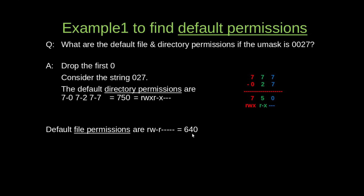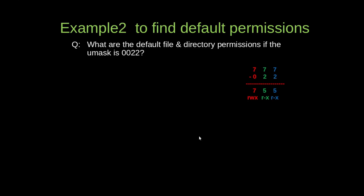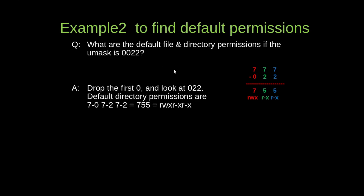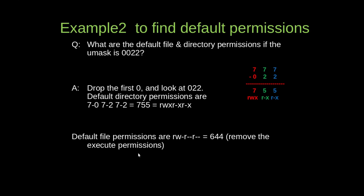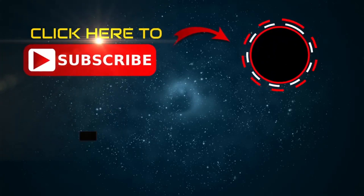For default file permissions, take the directory result and remove x from every position. So for umask 022: directory default is 755, and removing x gives file default as 644 — read and write for user, read for group owner, read for others. For umask 027: directory is 750, and file default is 640 — read and write for user, read for group owner, no permissions for others.